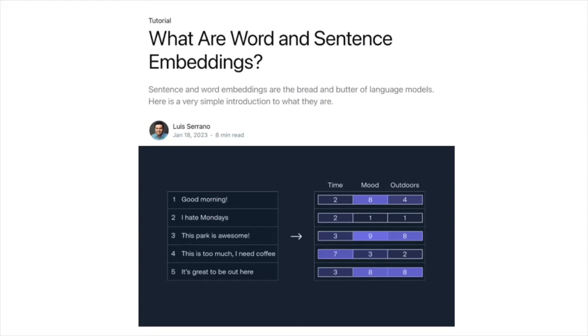So similar words get closer and closer together. Same thing with sentences — you get some really, really cool results. This video accompanies a blog post called 'What Are Word and Sentence Embeddings,' which you can find on the Cohere blog.